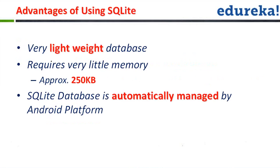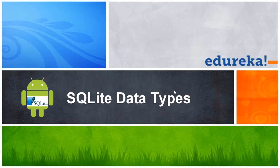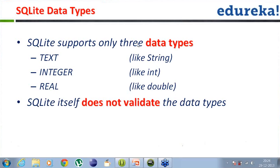The advantages are: it's a very lightweight database, requires very little memory, and most importantly, the database is automatically managed by the Android platform. Regarding SQLite database types, SQLite majorly supports only the following data types: TEXT, INTEGER, and REAL. There is also one more data type called BLOB — binary large object files. If you want to store a date, store it as TEXT. If you want to store long values, store them as REAL. If you want to store an integer primary key, store it as INTEGER.